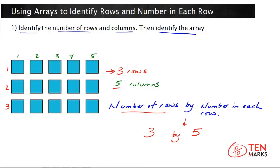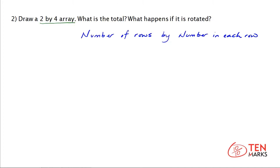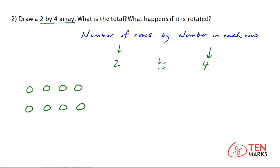Let's solve another problem. Draw a two by four array. What is the total and what happens if it's rotated? Remember that arrays are named by writing the number of rows by the number in each row. This problem is identified as two by four, which means there are going to be two rows by four in each row. Here's a two by four array — notice that there are one, two rows and there are four in each row: one, two, three, four.